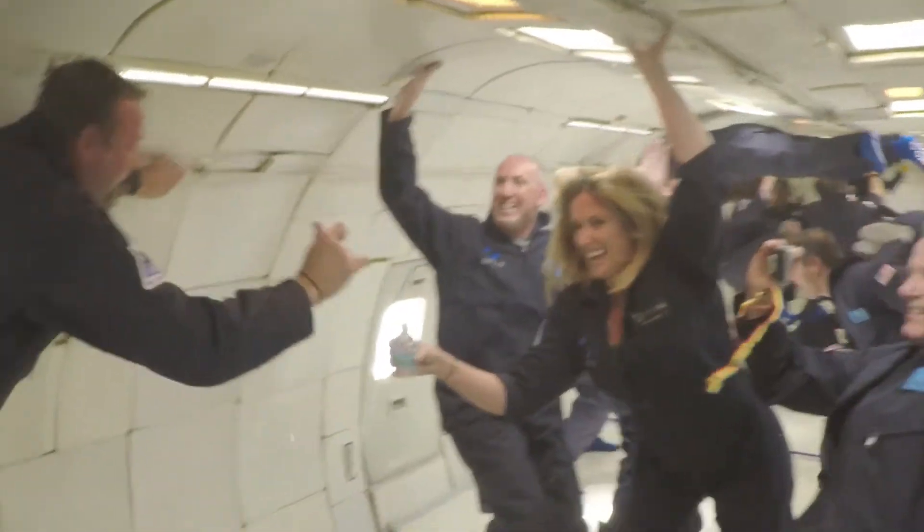A flight with zero-g is a wild experience. First, you're pressed down into the floor at twice the force of gravity as the plane climbs up into the sky on a 45-degree angle. Then the plane reaches the apex of its arc and all of a sudden, zero-g, you start tumbling around the cabin like a helium balloon.